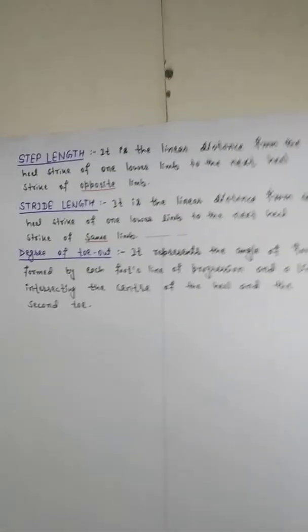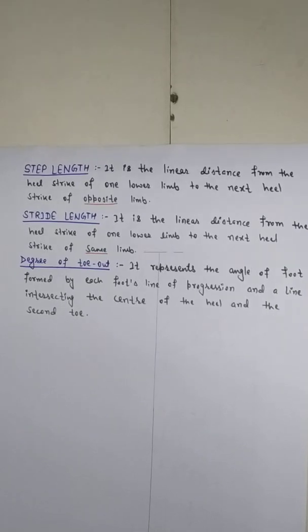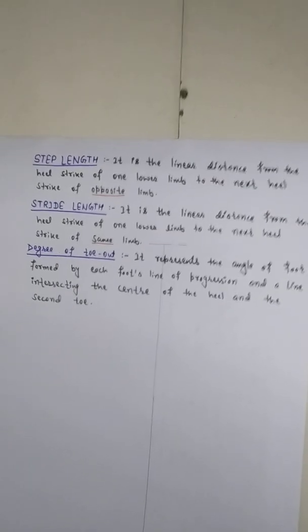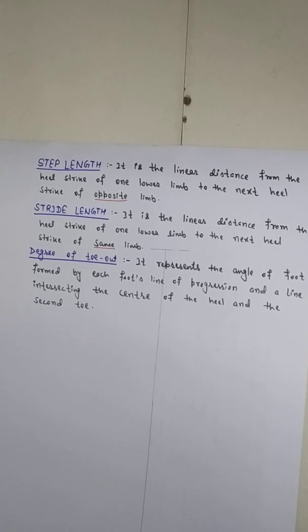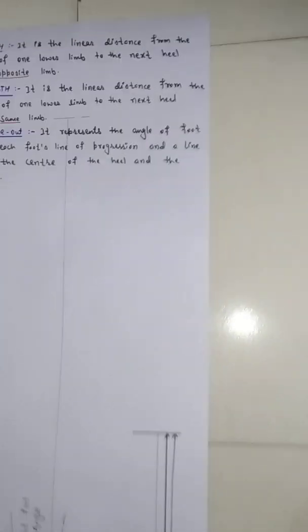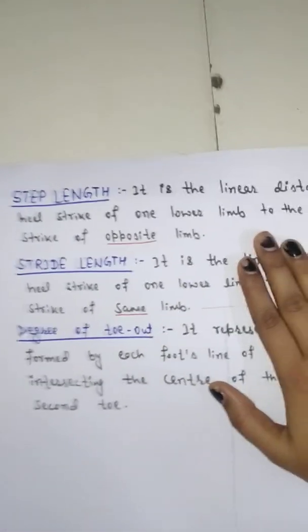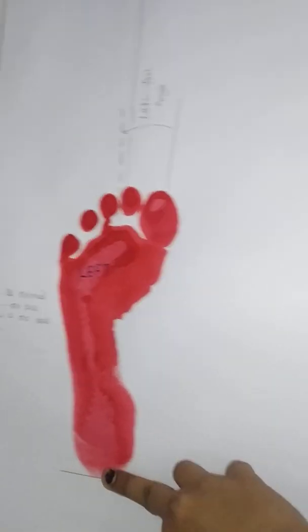First we are going to discuss about step length. The definition of step length is the linear distance from the heel strike of one lower limb to the next heel strike of the opposite limb. In real terms, the step length is the distance between the heel of the left leg and the heel of the right leg.